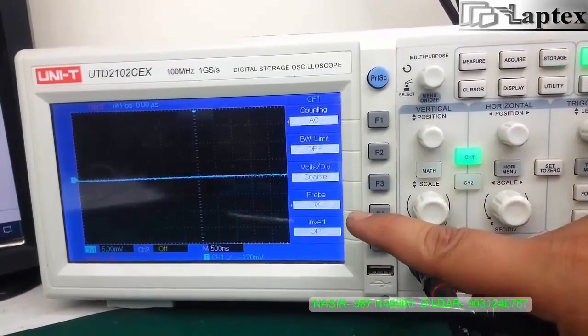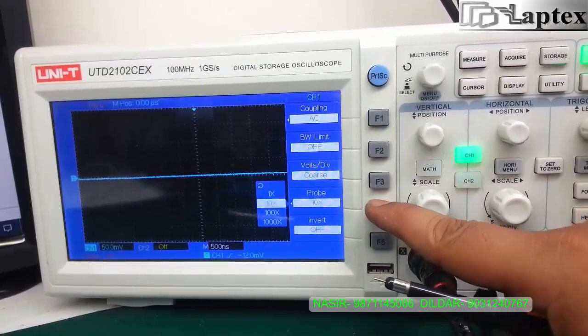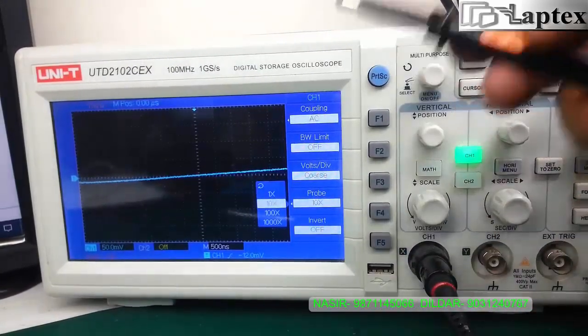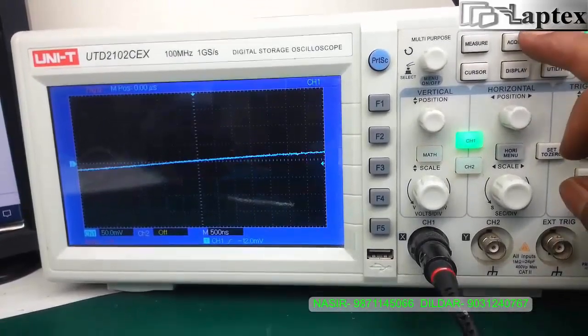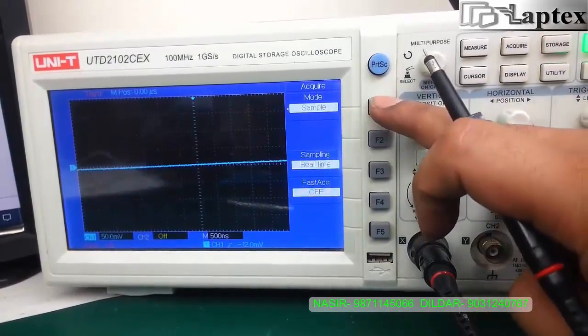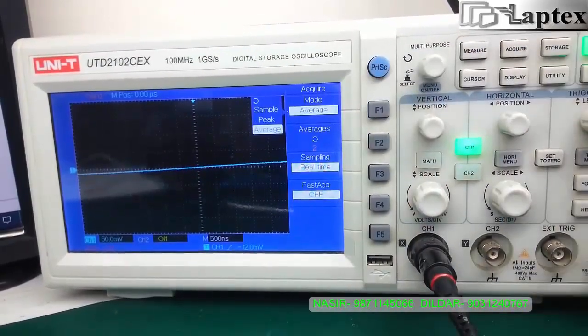You can go through the channel and see the probe setting: it is 1x, 10x, 100x, and 1000x. But in the probe we have available only two settings, that is 1x and 10x. So I'm setting it to 10x. Now we'll see a bit of setting in the acquire, and there is a mode setting where we have to change from sample to average.